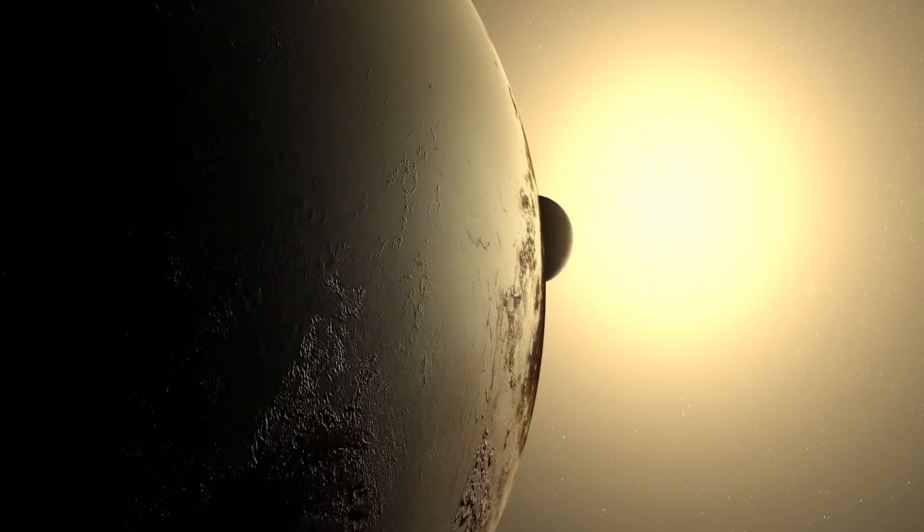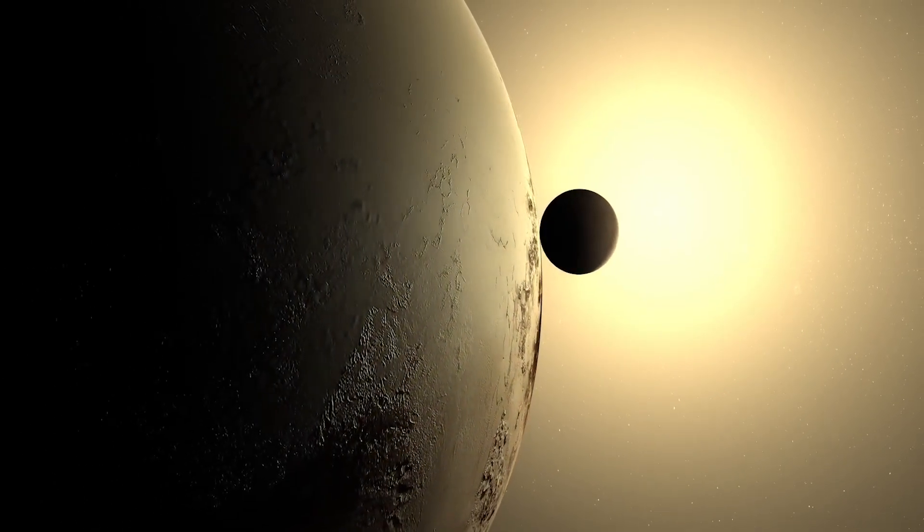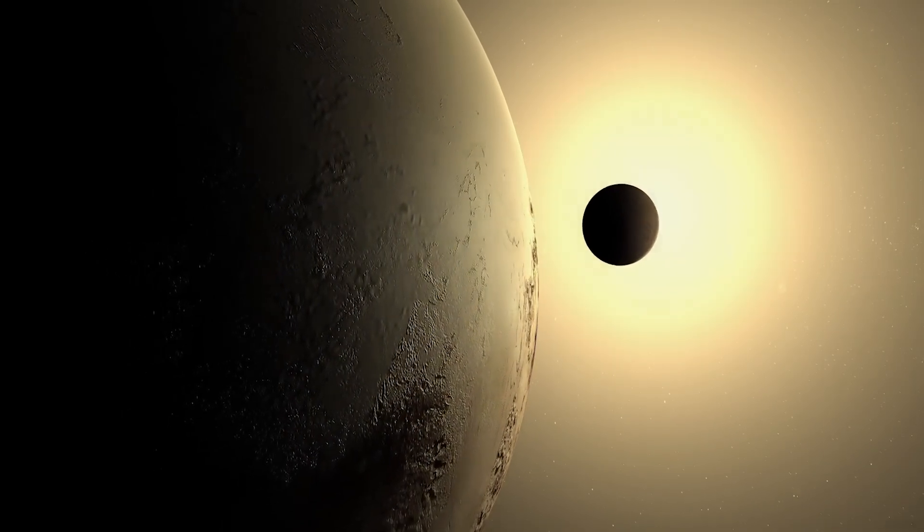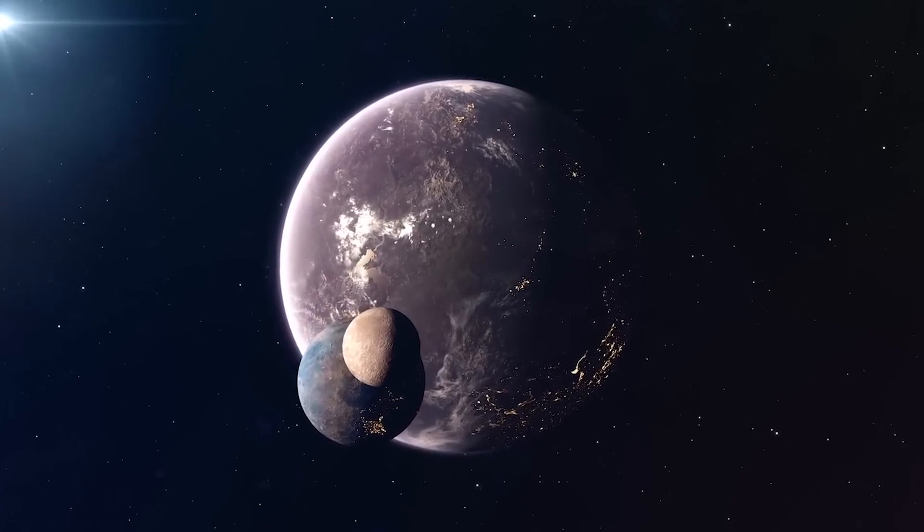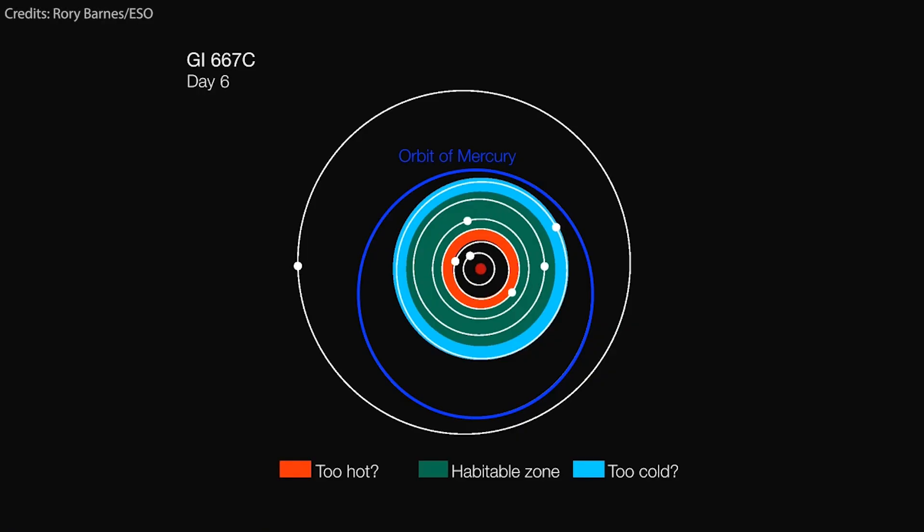But don't let its small size fool you. Gliese 667-C harbors a surprisingly bustling planetary neighborhood. Initially, scientists counted a modest three exoplanets orbiting this diminutive star. However, a meticulous revisit of existing data and additional observations unveiled the potential presence of six planets within this planetary system.